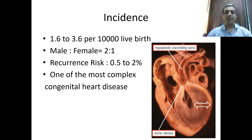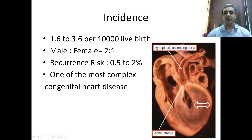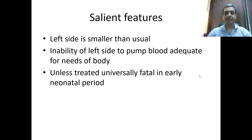The risk of recurrence if anybody is affected in the family is 0.5 to 2%. Looking at this specimen from Anderson, the basic pathology is that the left ventricle is very thick with a very short lumen cavity not reaching up to the apex, compared to the RV cavity which reaches up to the apex. The ascending aorta is very small compared to the pulmonary artery. This anomaly is universally fatal in the early neonatal period unless treated immediately.